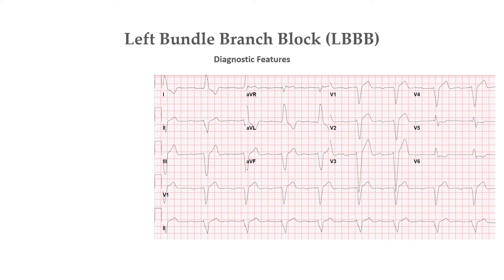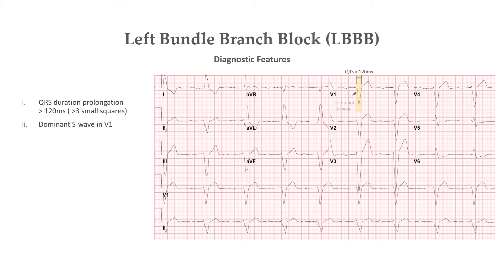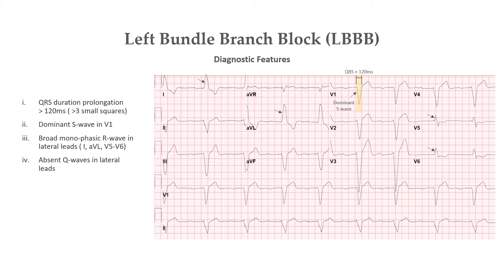First, let's see when we'll call an ECG having left bundle branch block. ECG diagnostic criteria of left bundle branch block include QRS duration prolongation greater than 120 ms, that is more than 3 small squares. Dominant S wave in V1. Broad monophasic R wave in lateral leads, which are lead 1, AVL, V5-V6. Absence of Q waves in lateral leads.